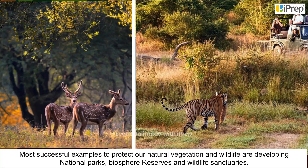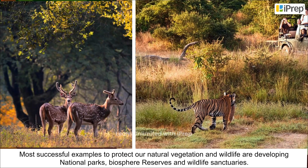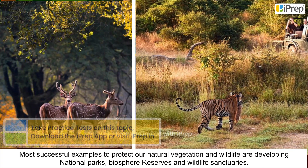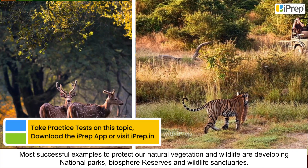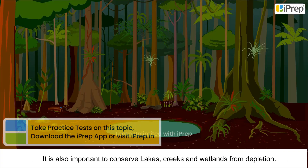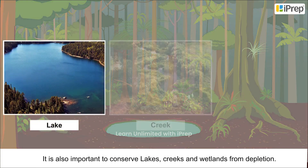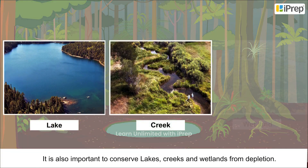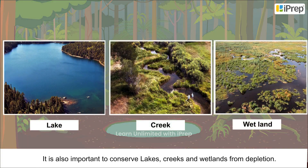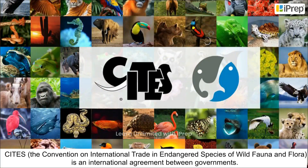The most successful examples to protect our natural vegetation and wildlife are developing national parks, biosphere reserves, and wildlife sanctuaries. It is also important to conserve lakes, creeks, and wetlands from depletion.